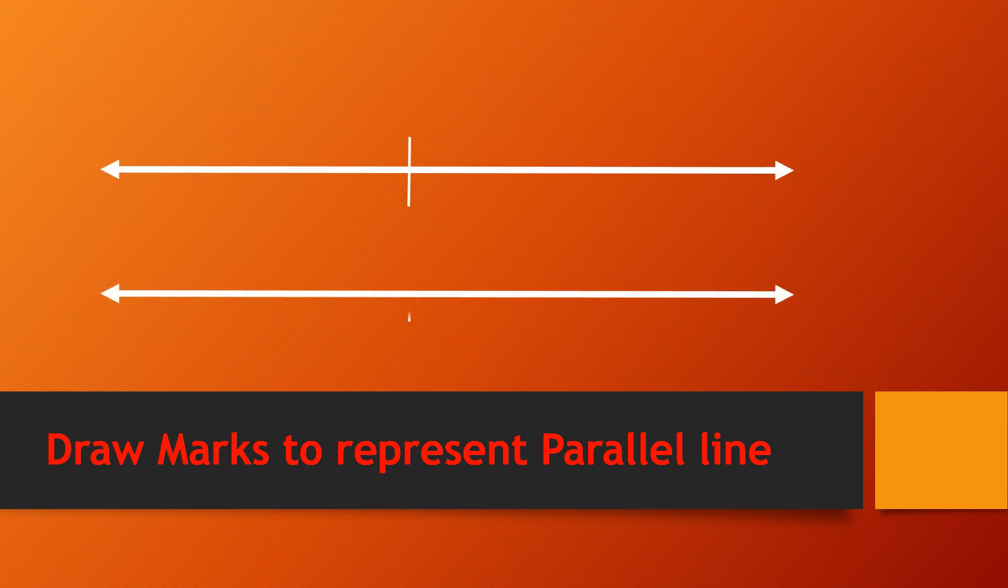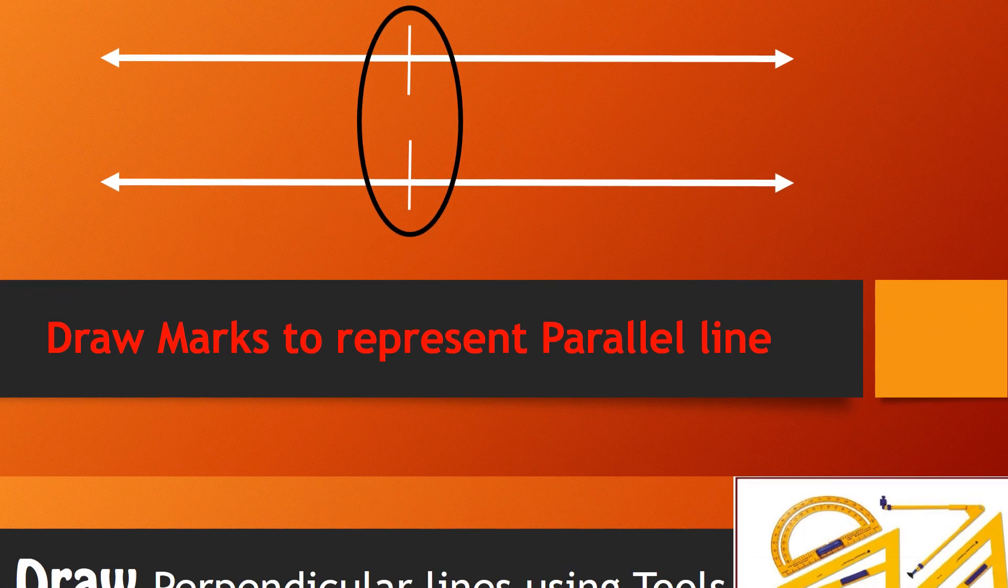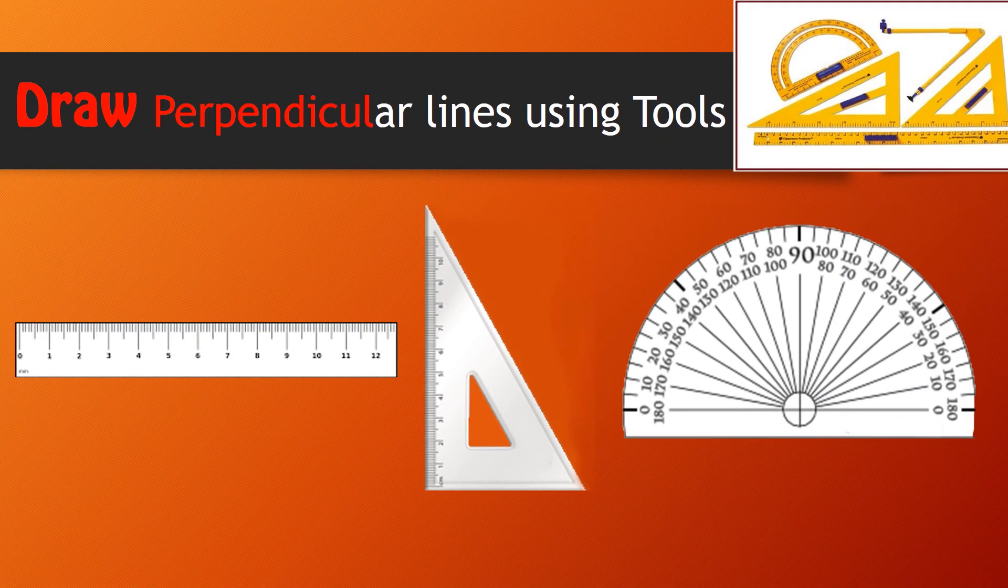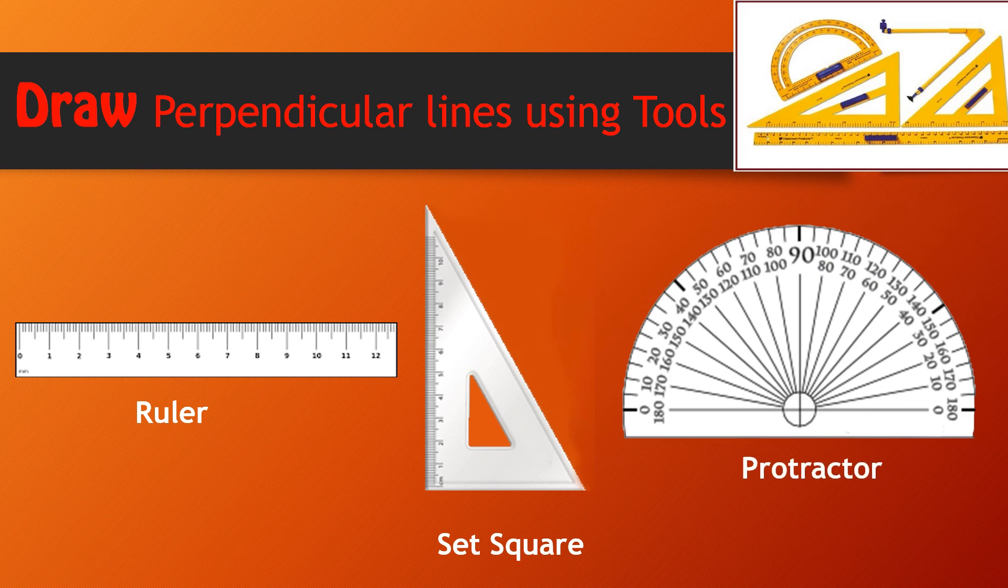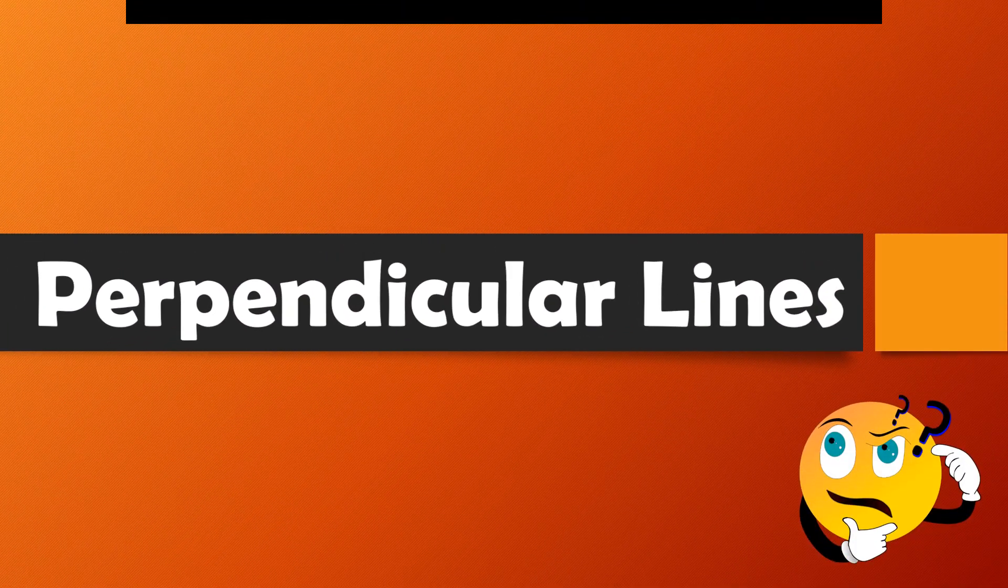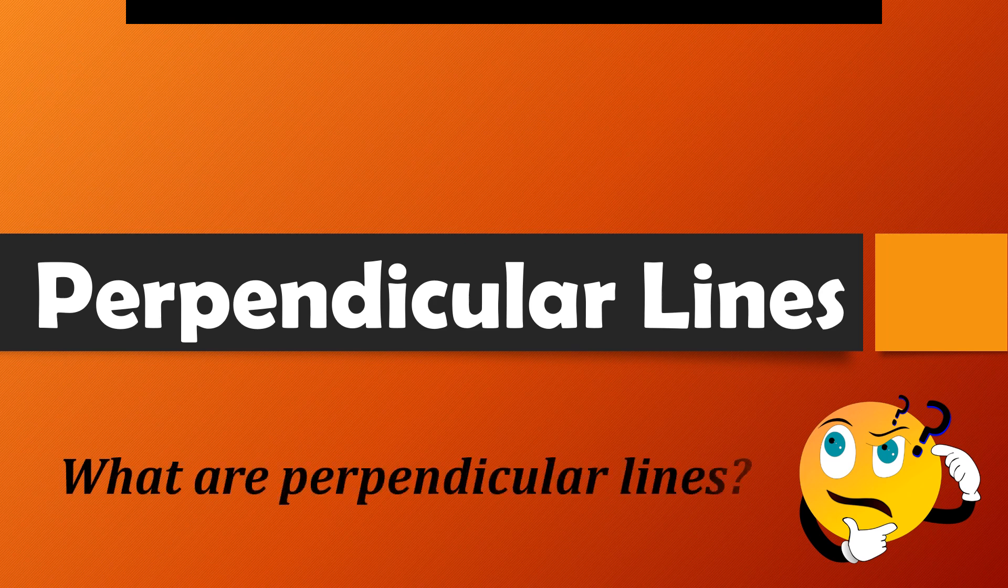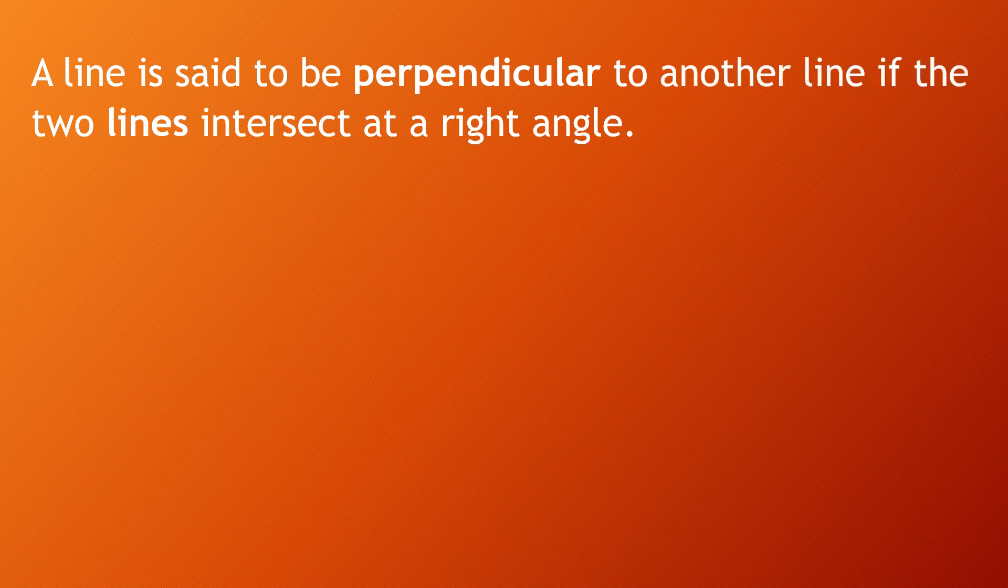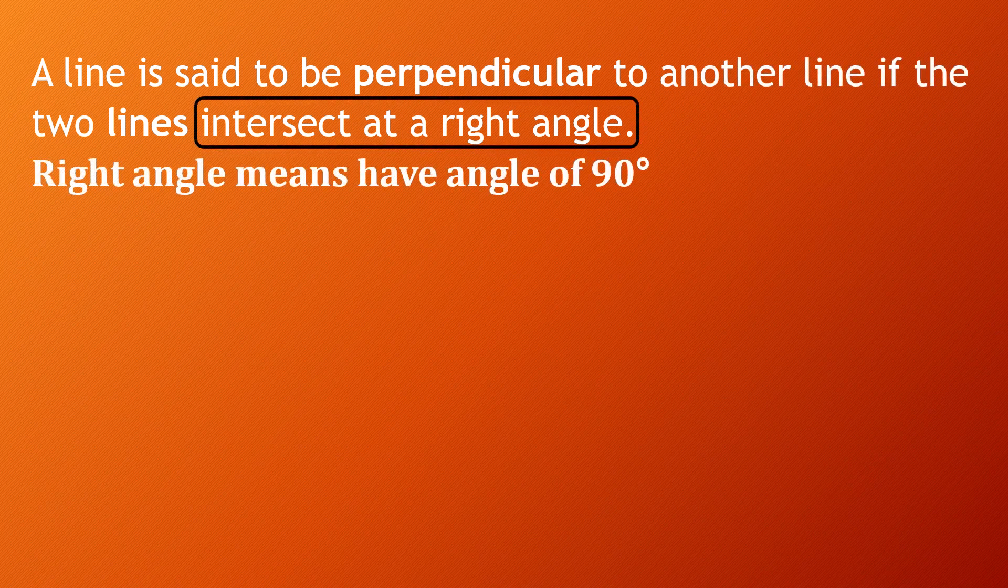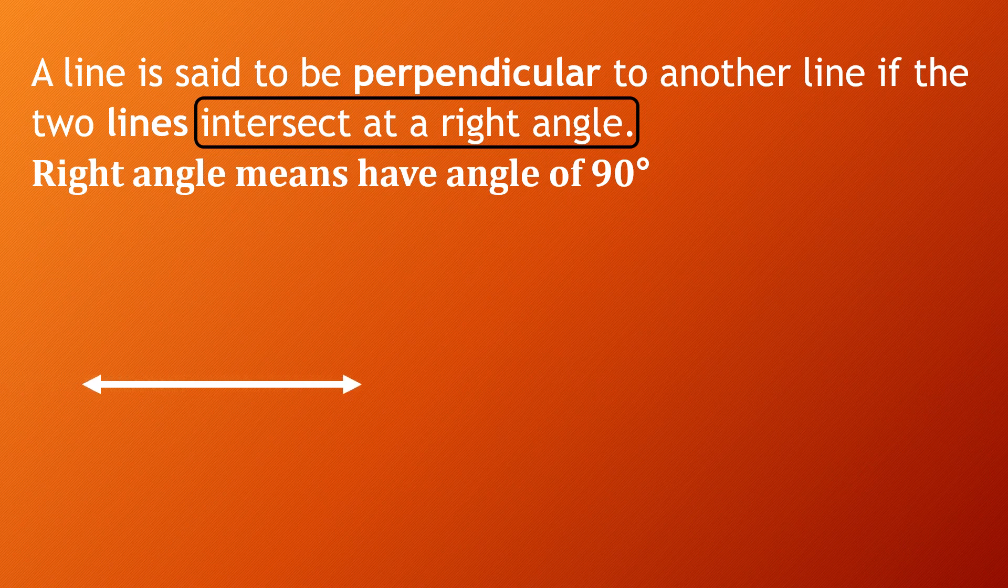Now you can draw perpendicular lines using these tools as well: ruler, set square, and protractor. But first, let's learn what are perpendicular lines. A line is said to be perpendicular to another line if the two lines intersect at a right angle.